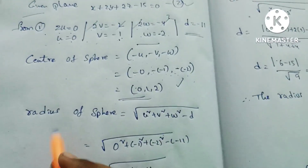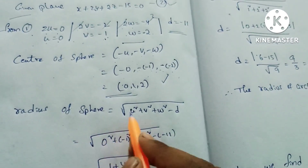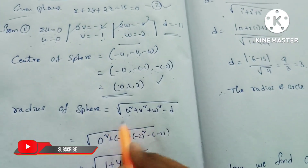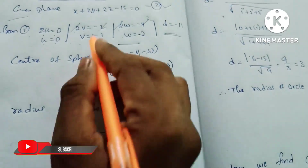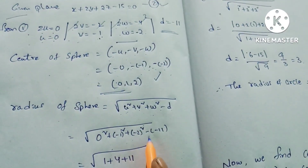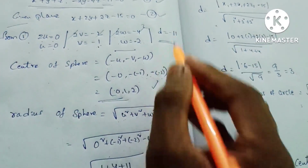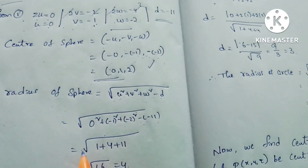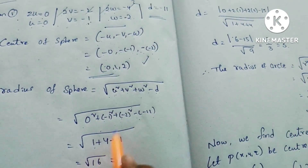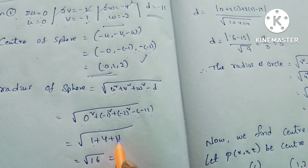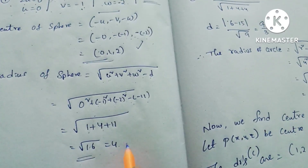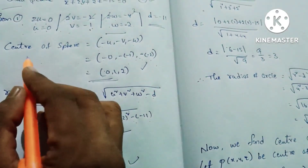Now for the radius. The radius of the sphere is given by the formula: r = √(u² + v² + w² - d). Substituting: u = 0, so 0² = 0; v = -1, so (-1)² = 1; w = -2, so (-2)² = 4; and -d = -(-11) = +11. Therefore r = √(0 + 1 + 4 + 11) = √16 = 4.